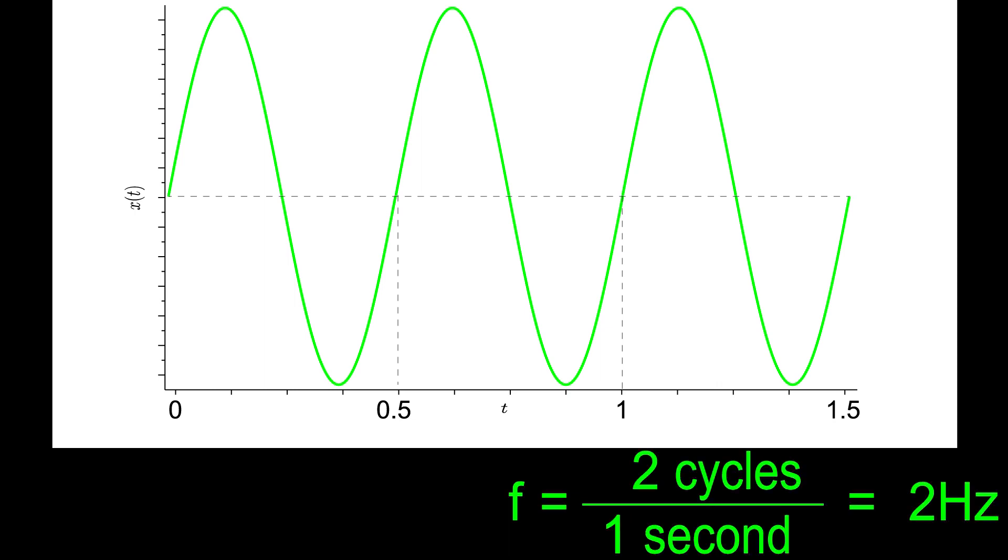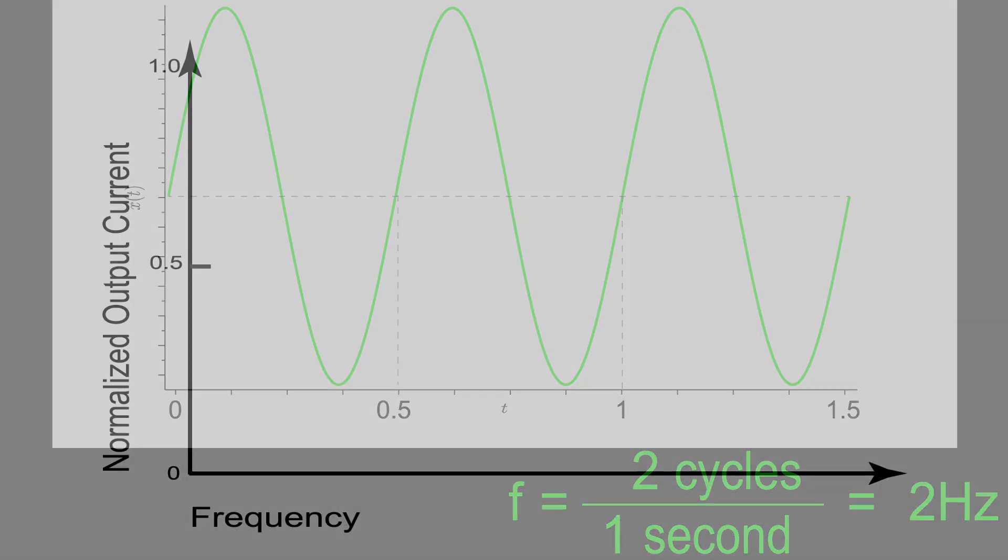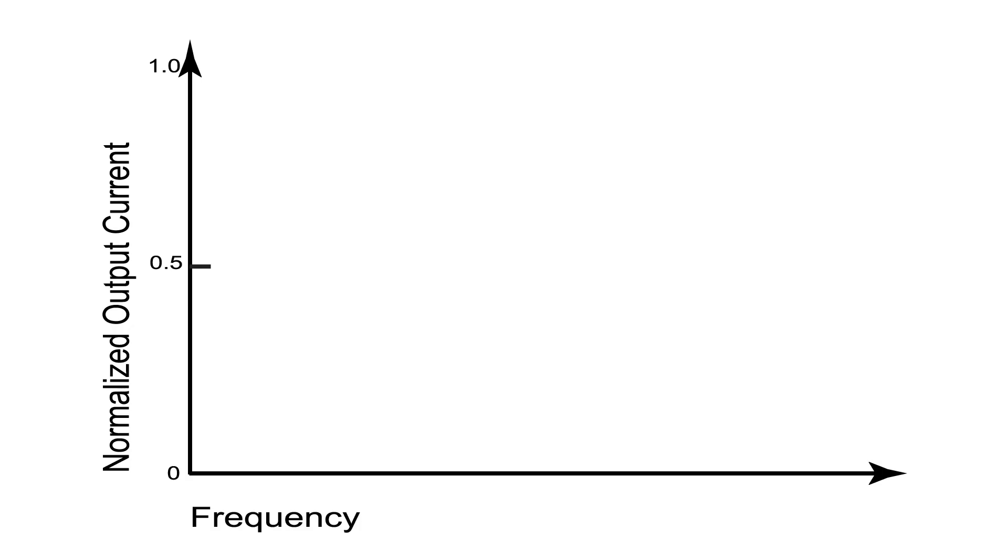For example, if the signal cycles twice in one second, then the frequency is 2 hertz. The range of frequencies a system can pass is given by the system bandwidth.